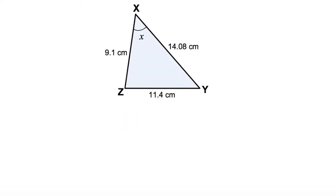Question 2 involves finding the missing angle. We are given the measurements of all three sides. Side X to Z is 9.1, Z to Y is 11.4, and Y to X is 14.08 centimetres. We label the sides A, B, or C. The length A is always opposite the angle we require — so 14.08 centimetres is A, as it is opposite the angle X. I'm going to label the other sides B and C.